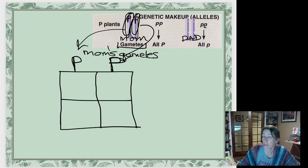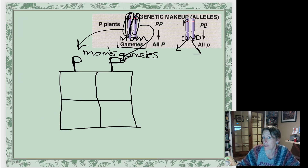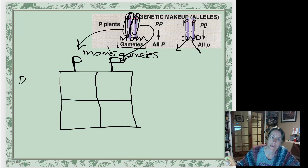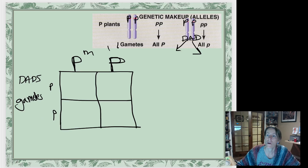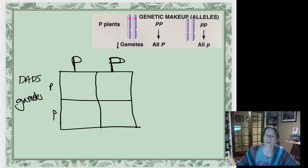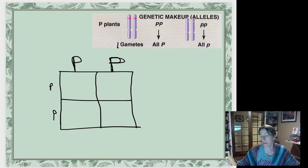When the dad makes his sperm, he does meiosis to separate the pair of chromosomes: 50% of the sperm get one chromosome and 50% get the other — but again, because these are the same, they've both got a little p on them. All the sperm are going to have a little p. In genetics, we always put the dad's gametes down the side. So dad can make little p sperm or little p sperm — or little p pollen, really, because it's a plant.